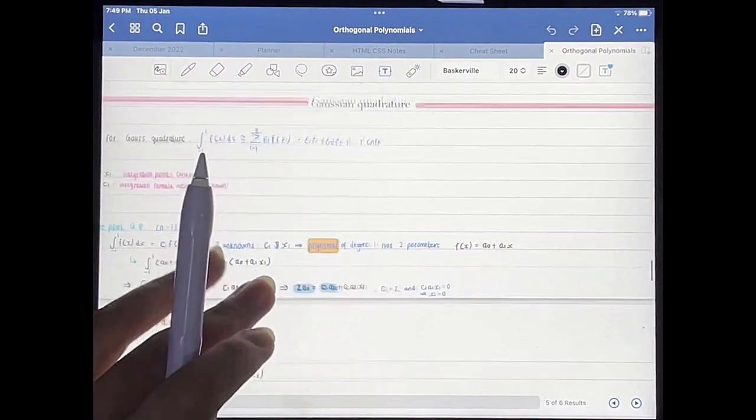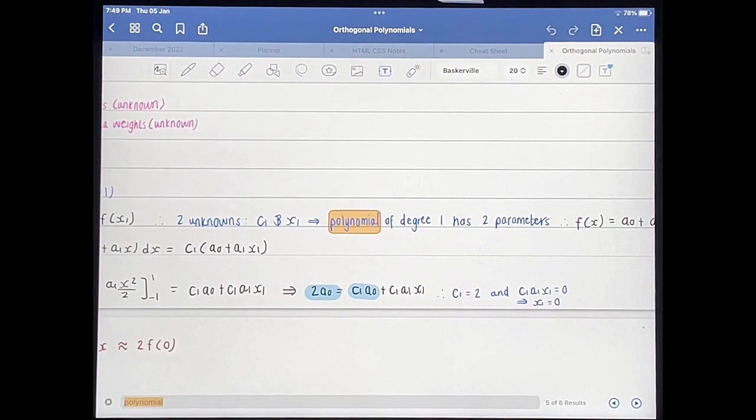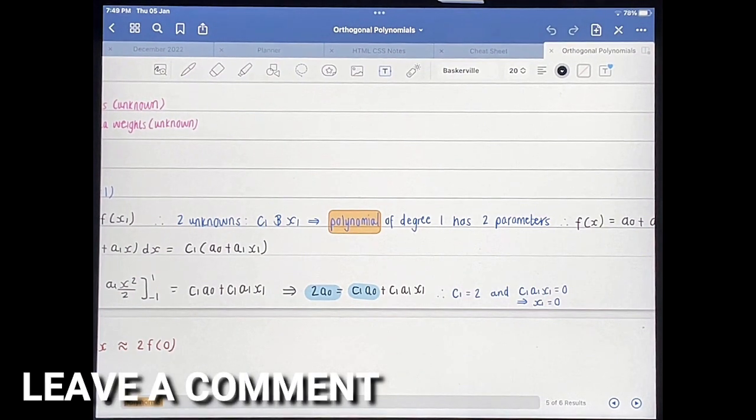So yeah, that's basically it. If you wanted to know how to search handwritten text in GoodNotes 5, this is the easiest way I know how. And if you know of another way then leave a comment below and make sure to subscribe for more videos.